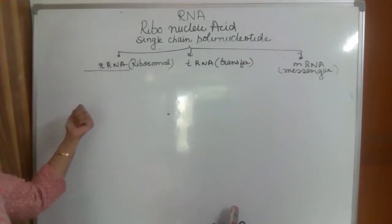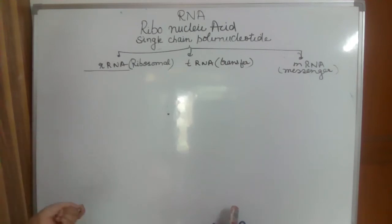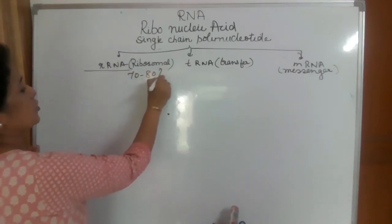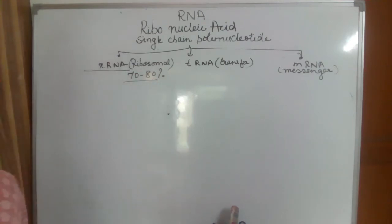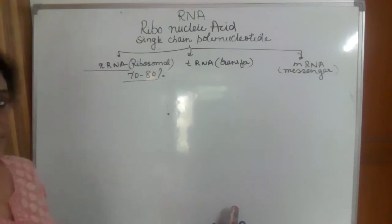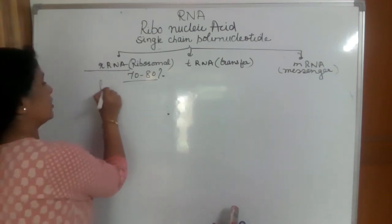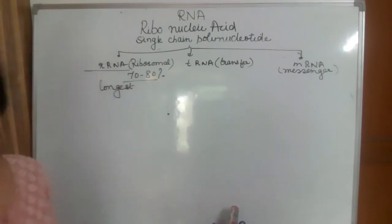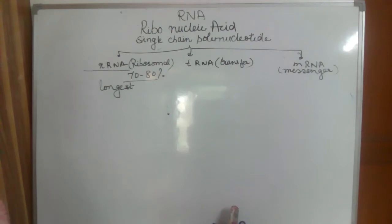These are the most common type of RNA. Around 70 to 80% of total RNA is rRNA, and some of them are the longest also. As the name indicates — R, ribosomal — these form a component of ribosomes.